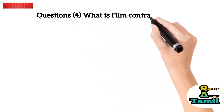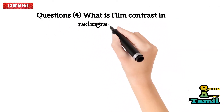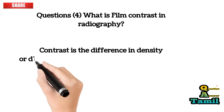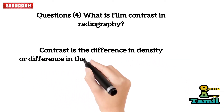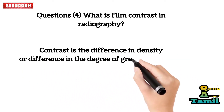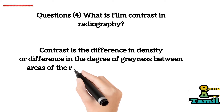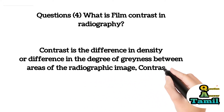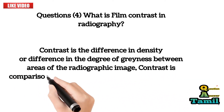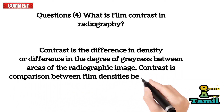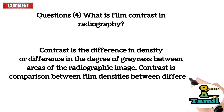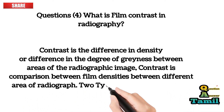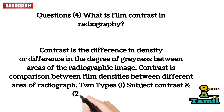Question 4: What is film contrast in radiography? Contrast is the difference in density, or difference in the degree of grayness, between areas of the radiographic image. Contrast is a comparison between film densities in different areas of the radiograph. There are 2 types: 1. Subject contrast and 2. Film contrast.